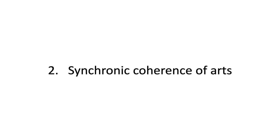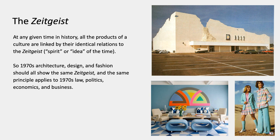The second really influential idea in Hegel is the synchronic coherence of the arts. Synchronic is the connection within a given moment in time rather than through time. There's another term that has become very common and is basically used in English informally all the time: the zeitgeist. The idea in Hegel is that at any given time in history, all the products of a culture should be linked by their identical relation to the zeitgeist — the spirit or idea of the time. So 1970s architecture, design, and fashion should all show the same zeitgeist, and the same principle applies to law, politics, economics, business, everything else in the 1970s.